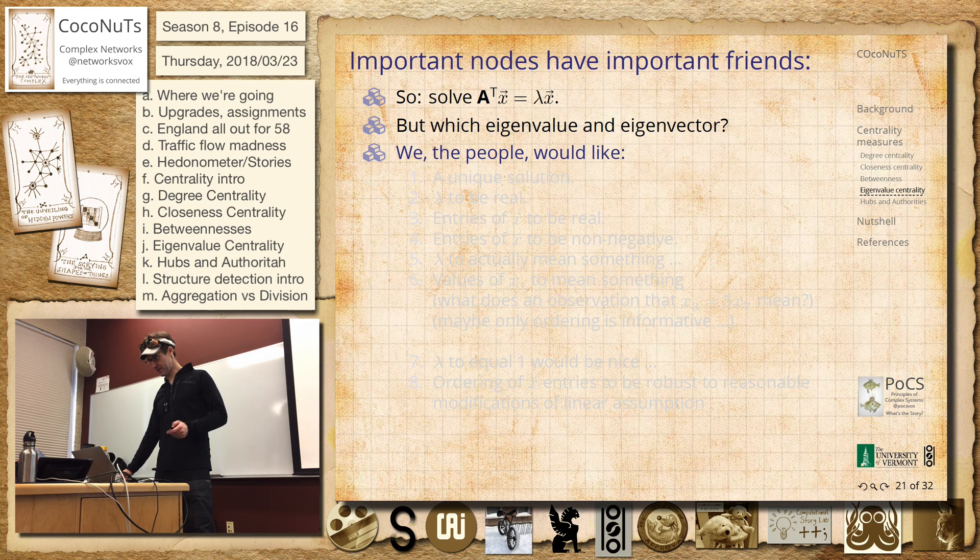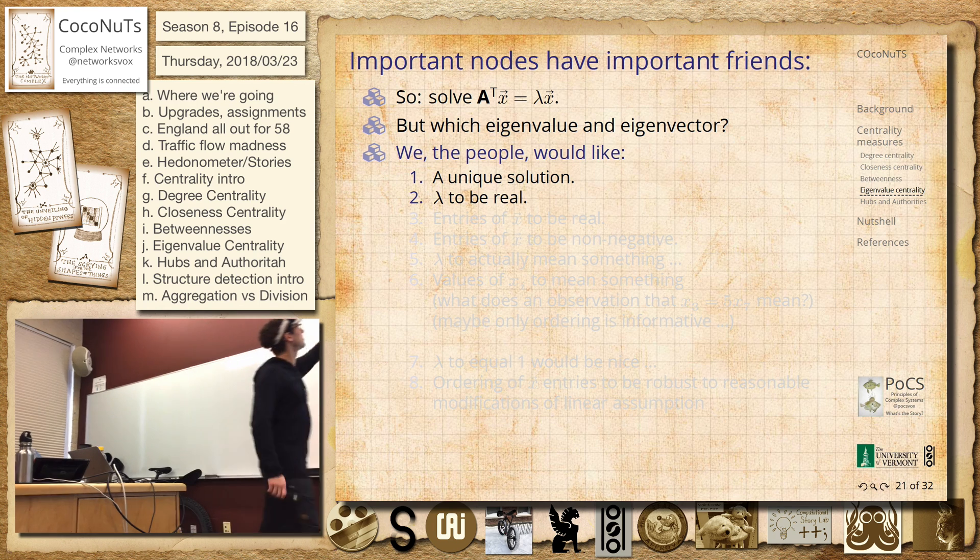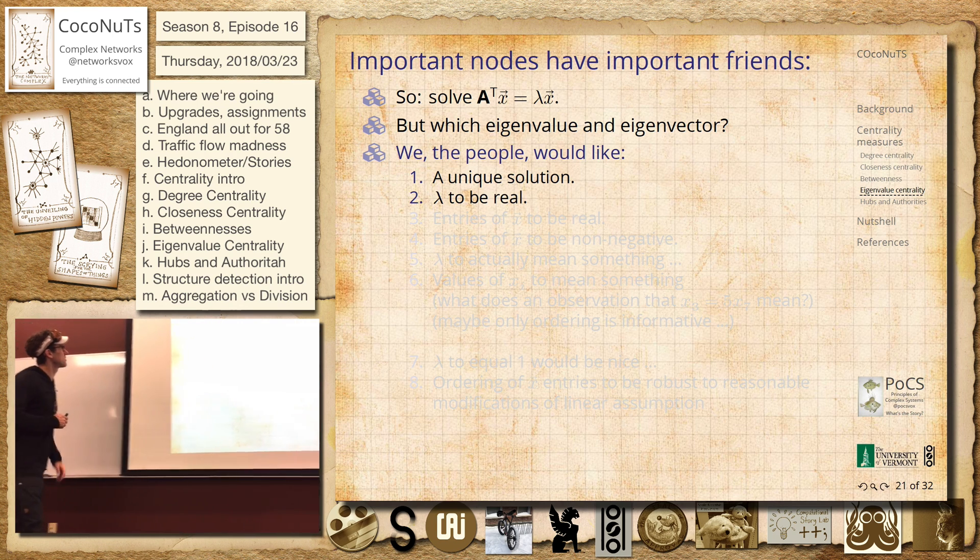So there are a couple of things. So we'd like these things. So we would like a unique solution. That would be good. You don't want two different complete sets of two different. You could have two dominant eigenvalues that are the same, and repeated eigenvalues. That would be bad.